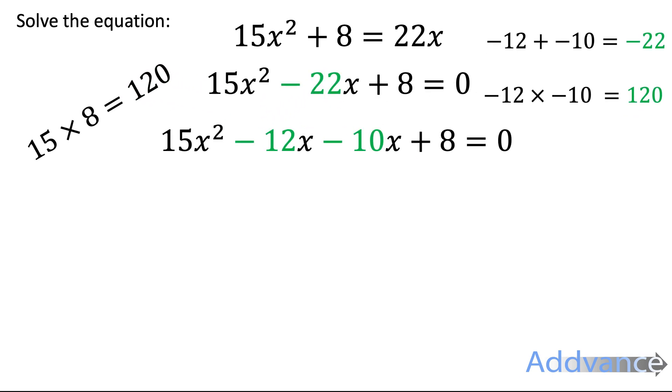You split the minus 22x in the middle of the quadratic up into those two numbers as minus 12x minus 10x. And again, the middle terms are the same as before. We factorise the first two terms like this and we factorise the last two terms like this.